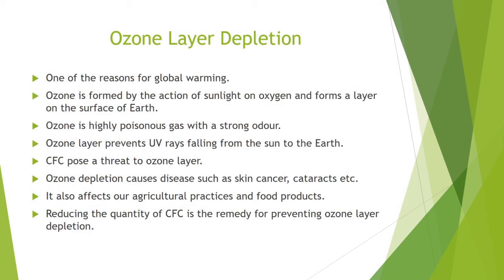Next is ozone layer depletion — another challenge that needs to be addressed and one of the main reasons for global warming. Ozone is formed by the action of sunlight on oxygen and forms a layer 20 to 50 km above the surface of the earth. Ozone is a highly poisonous gas with a strong odor. The ozone layer prevents ultraviolet rays from the sun from reaching the earth.